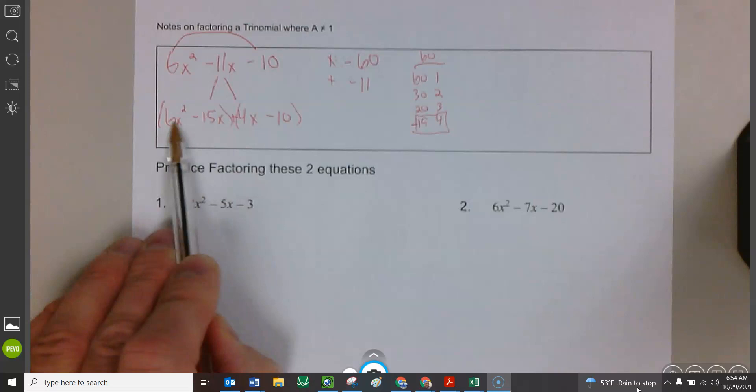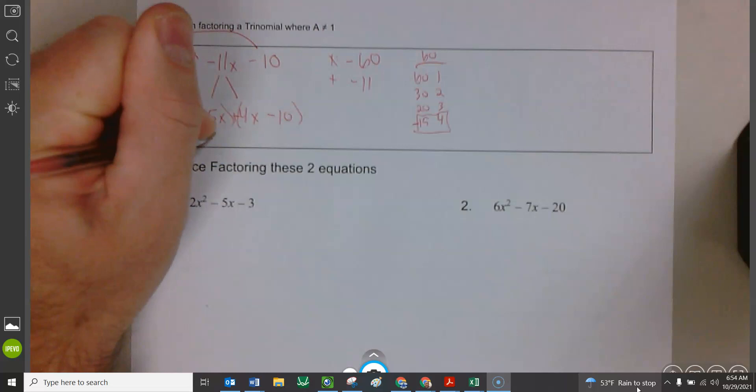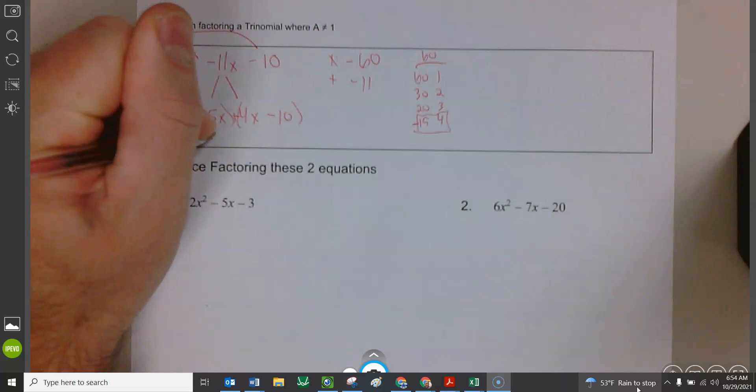So let's see. Between these, they both don't have a two. They both have a three, though. Three times two, three times five. So I'm going to take a three. And they both have an x. So I'll take that out. Three x. That'll leave me with two x minus five.